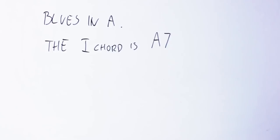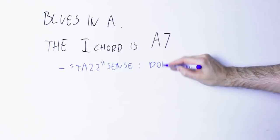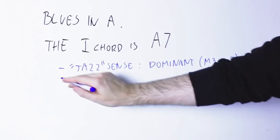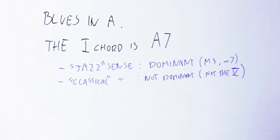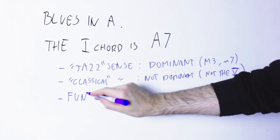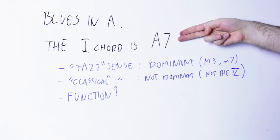This chord is dominant in the jazz sense, meaning it has a major third and a flat seven. But it's definitely not dominant in the classical sense because it's the first chord of the key, not the fifth. And here's the thing: since this chord does not resolve to another chord, it's not a tension chord resolving to another chord in the same way that in classical music you have a fifth chord to a first chord, this chord doesn't seem to have dominant function.